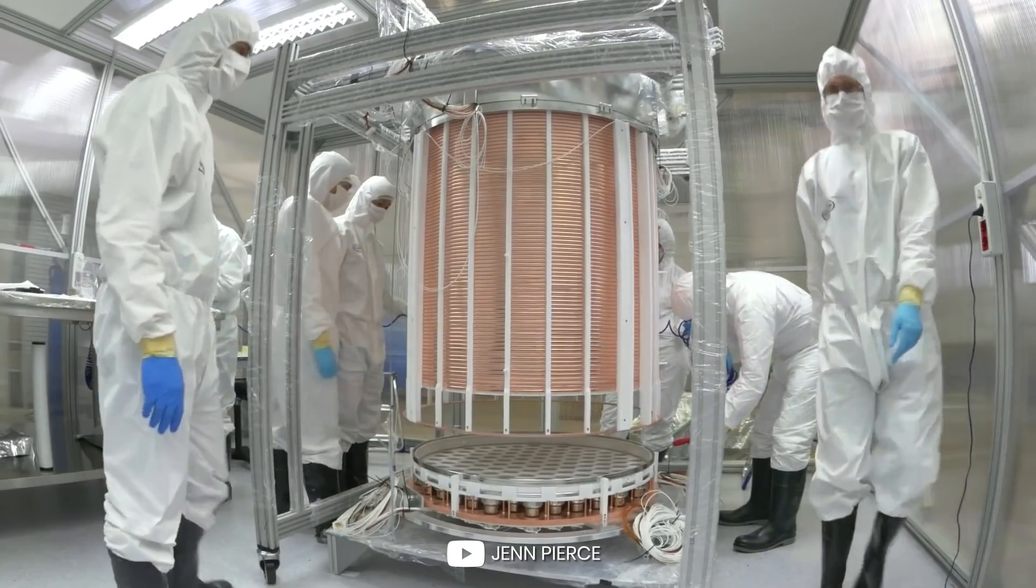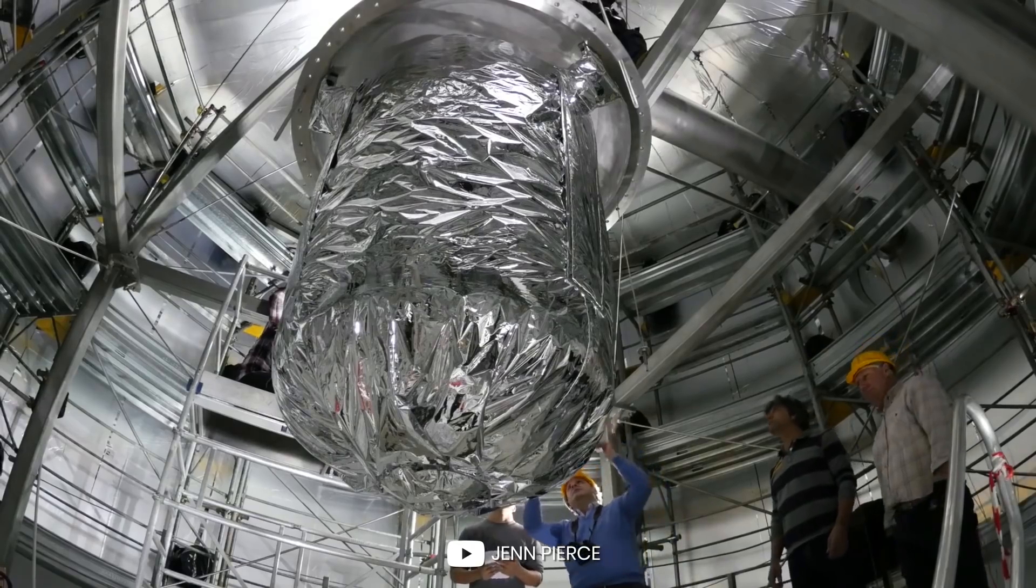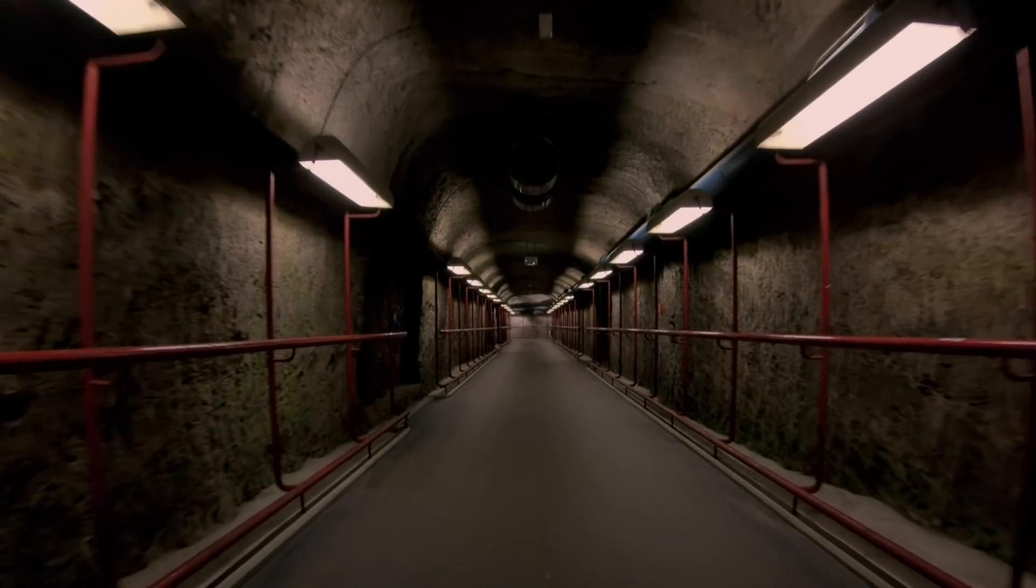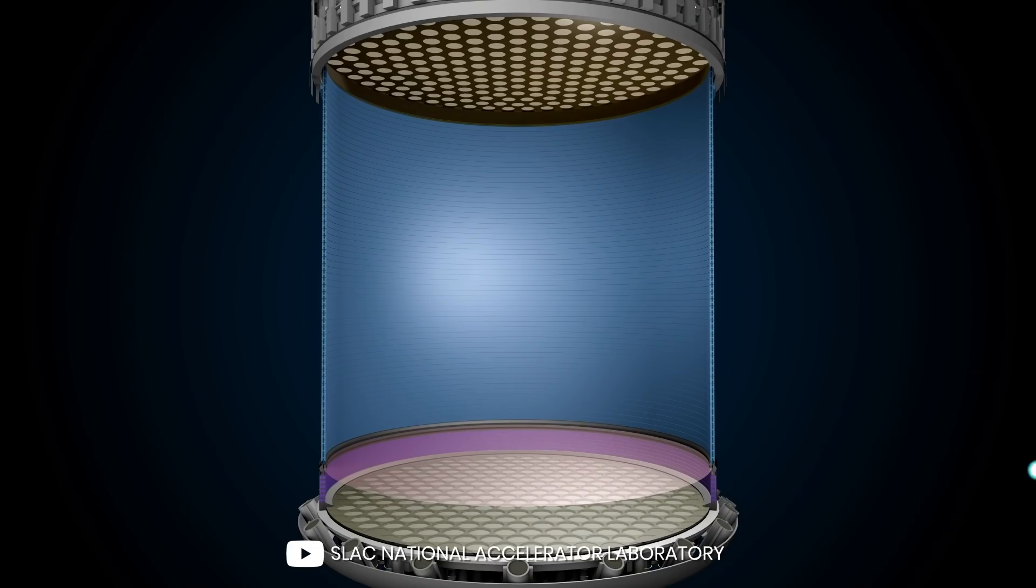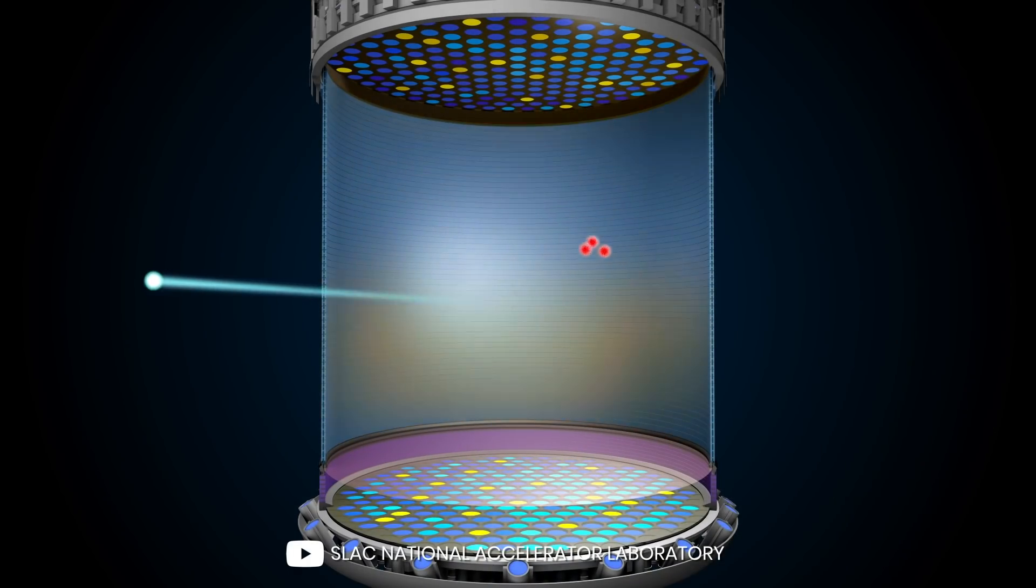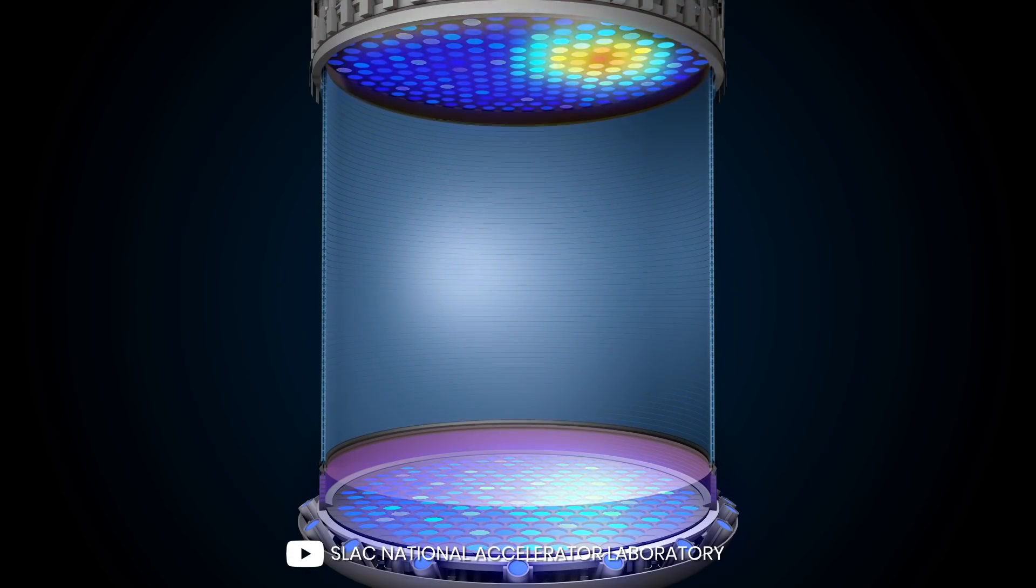The experiment was essentially a big tank full of liquid Xenon kept deep underground. The idea of the experiment was that if a dark matter particle zipped through the tank, it would excite the Xenon atoms to produce a flash of light and free electrons, and a suite of sensors would detect it.